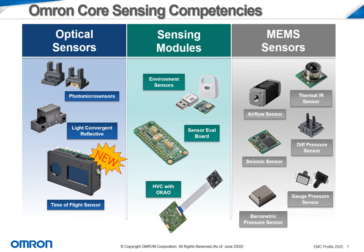OMRON offers a wide variety of sensor components and sensing technology that can be split into three different categories. Our optical sensors include our basic photomicrosensors, light convergence sensors, and our brand new time of flight sensor. Sensing modules include our environment sensor, our sensor evaluation board, and our human vision component equipped with our facial recognition software called OCAL.